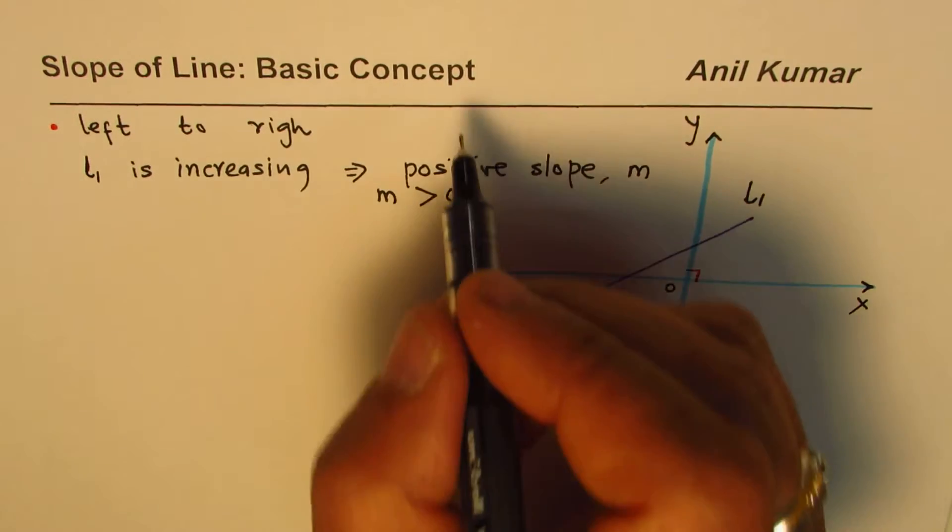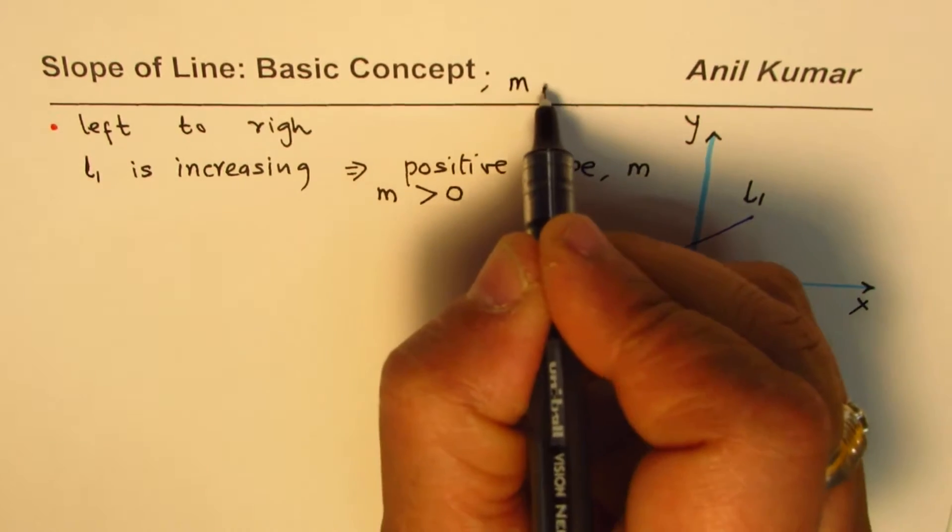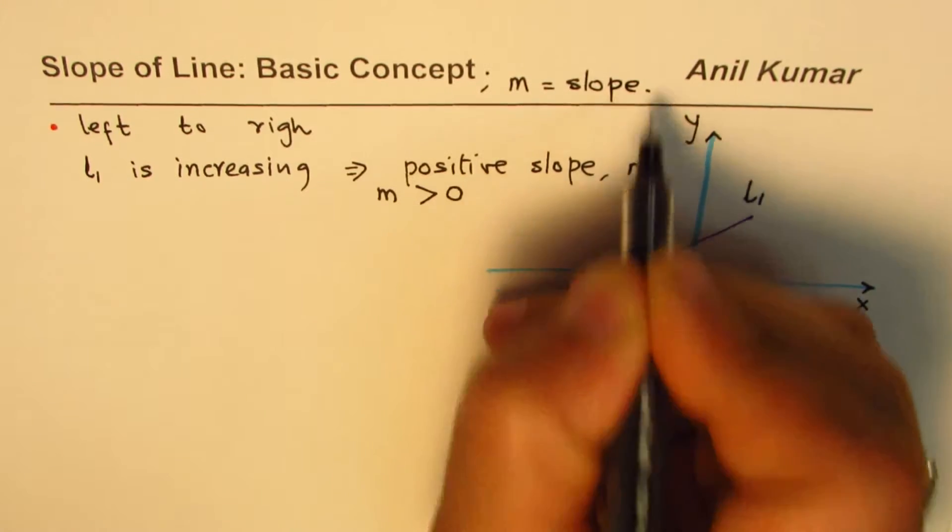So in this particular video, I am representing M as slope. For me, M is slope.